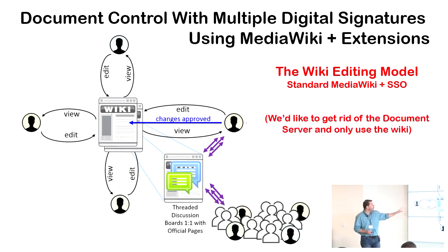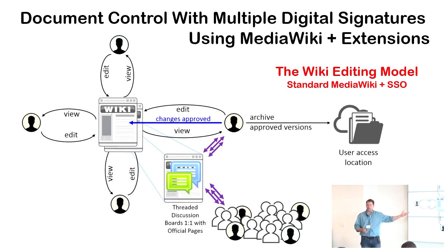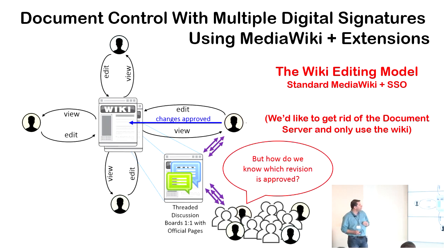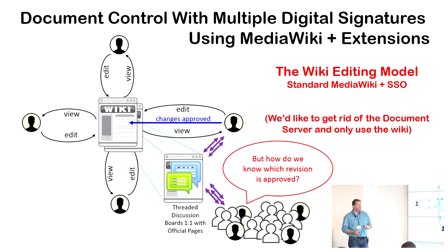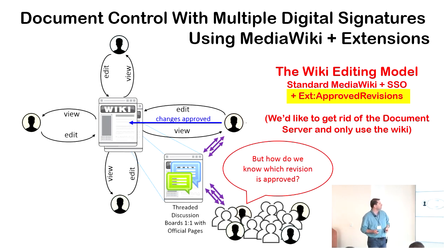The question is: can we eliminate the part where we take the finished product and put it into some kind of an access store? Can we work entirely out of the wiki? A smart user might ask: if the document is developed and used in the wiki, how do I know that the one I'm looking at is the correct one?